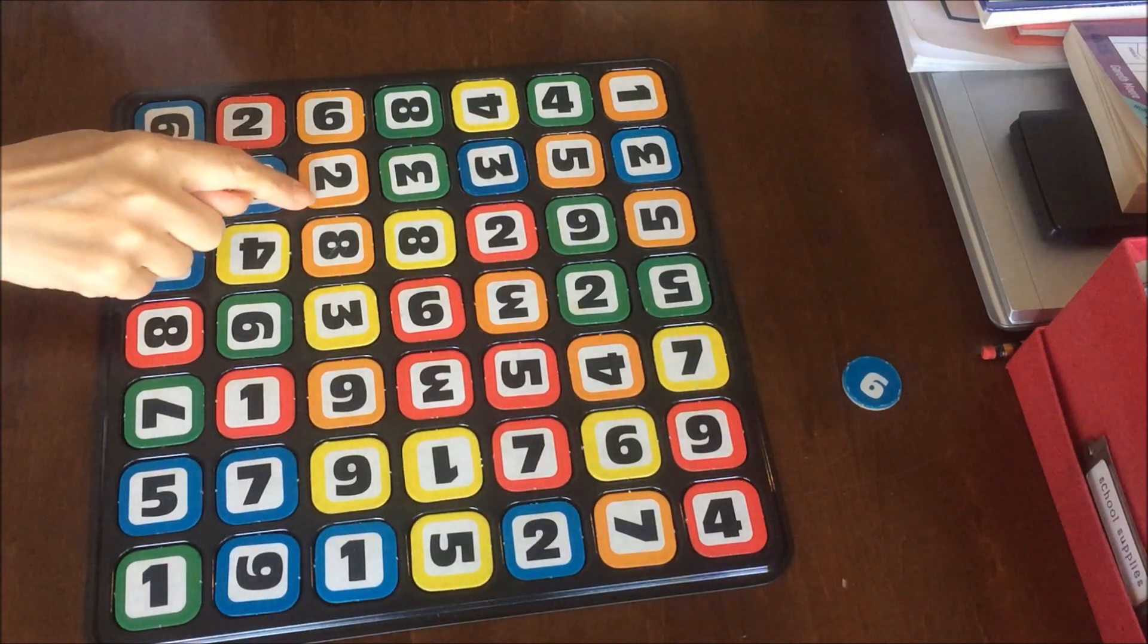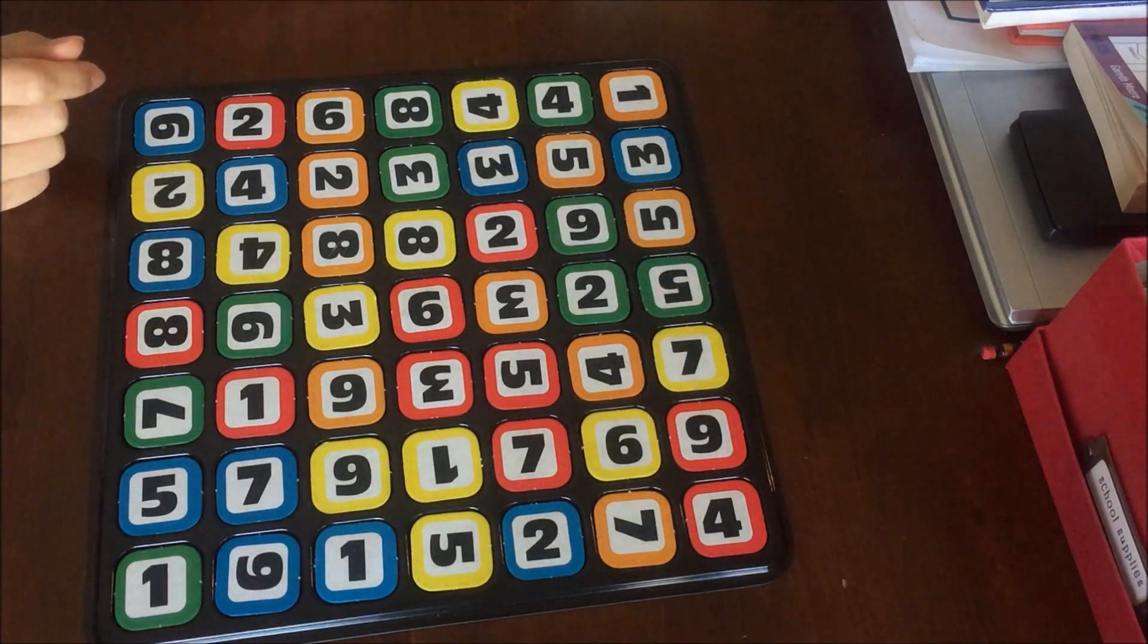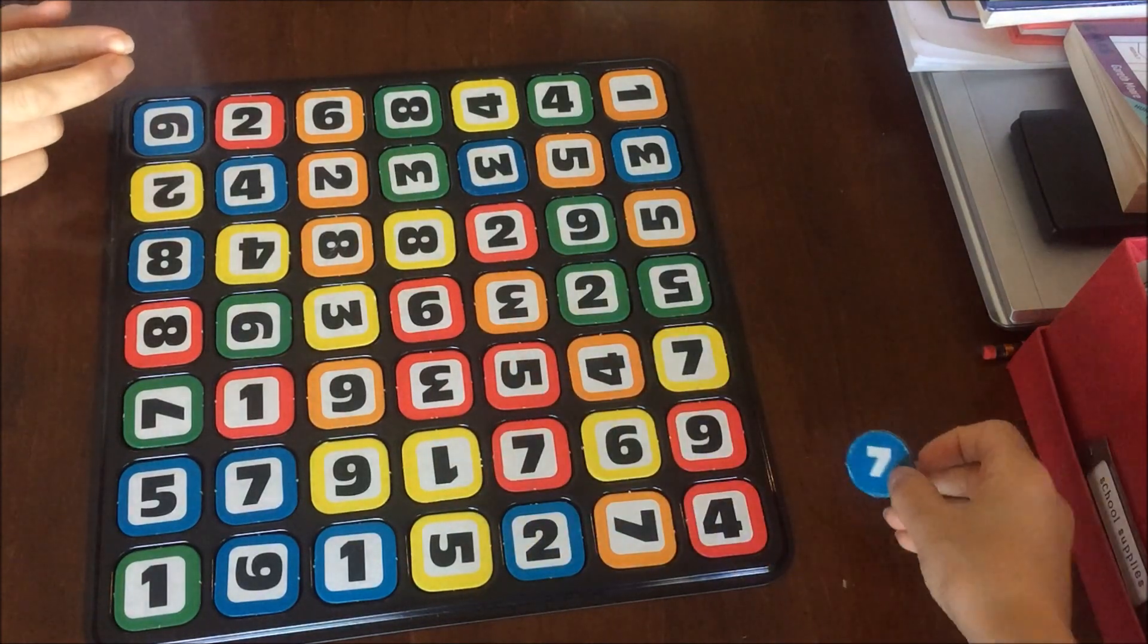So for this one, we're going to be looking for a 6, which is 2 times 4 makes 8 minus 2, and we have 6. Now we're looking for 7.